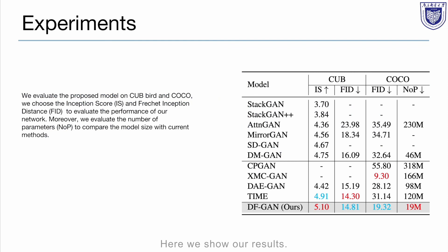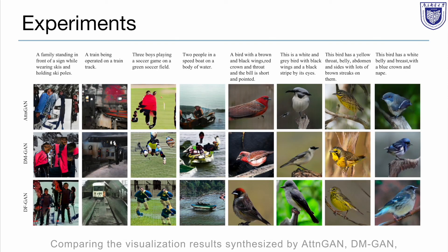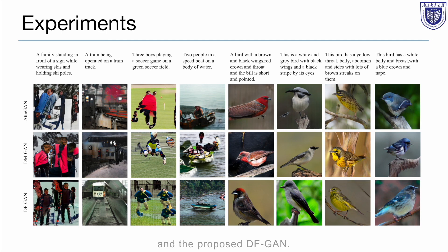Here we show our results. In quantitative comparison with other GAN-based models, our DF-GAN has a significantly smaller number of parameters but still achieves competitive performance. Comparing the visualization results synthesized by ATIN-GAN, DM-GAN, and the proposed DF-GAN, we can find that the images synthesized by our DF-GAN have better object shapes and realistic fine-grained details.